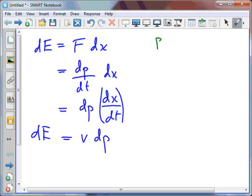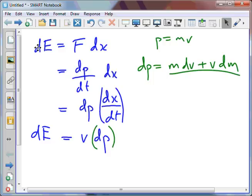Momentum, well dp is equal to m dv plus v dm. I could replace this with this, so I end up with dE as mv dv plus v squared dm.